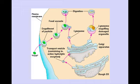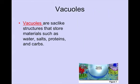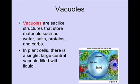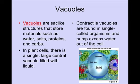Lysosomes are also found in single-celled animals, where they clean up and digest waste. We're going to conclude this podcast with vacuoles. Vacuoles are sac-like structures that store materials such as water, salts, proteins, and carbohydrates. Vacuoles are extremely small in animal cells and very large in plant cells. In plant cells, there's a large single central vacuole filled with liquid — the big blue structure you colored on the plant coloring sheet. Contractile vacuoles are found in single-celled organisms and pump excess water out of the cell. Both plant and animal cells have vacuoles; the difference is their size and function. This concludes the first half of 7-2 notes.